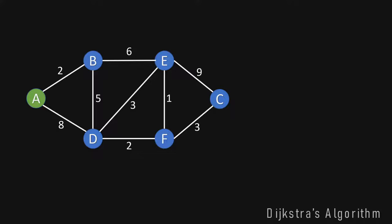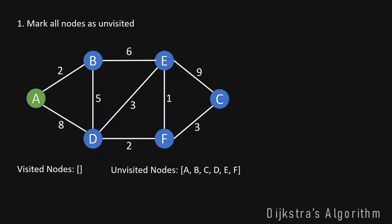The first information we need to keep track of is which nodes we have not visited yet. So in the first step we mark all nodes as unvisited. We create two lists: a list of unvisited nodes that contains every node in the graph, and a list of visited nodes that is empty in the beginning.